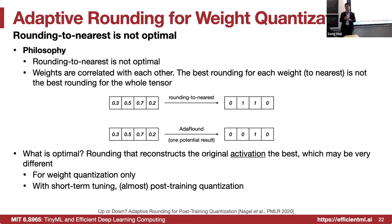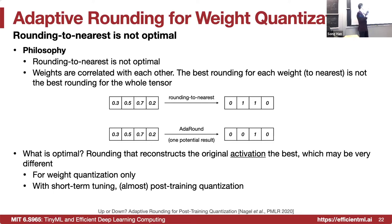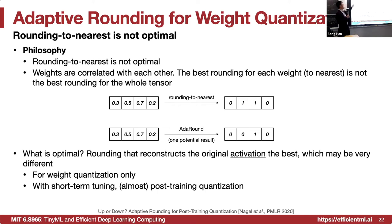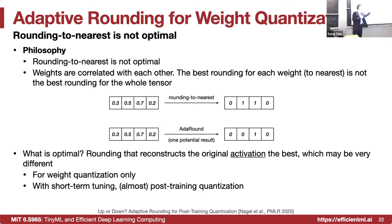Next is adaptive rounding. Quantization loses accuracy — it's all about rounding. For example, 0.3 rounds to 0, 0.5 rounds to 1, 0.7 rounds to 1, 0.2 rounds to 0. But is it optimal to round individual numbers independently? Actually, no — the weights interact with each other. The best rounding for each individual weight may not be the best rounding for the entire tensor. One potential result of adaptive rounding is that 0.5 might be rounded to 0 rather than 1.